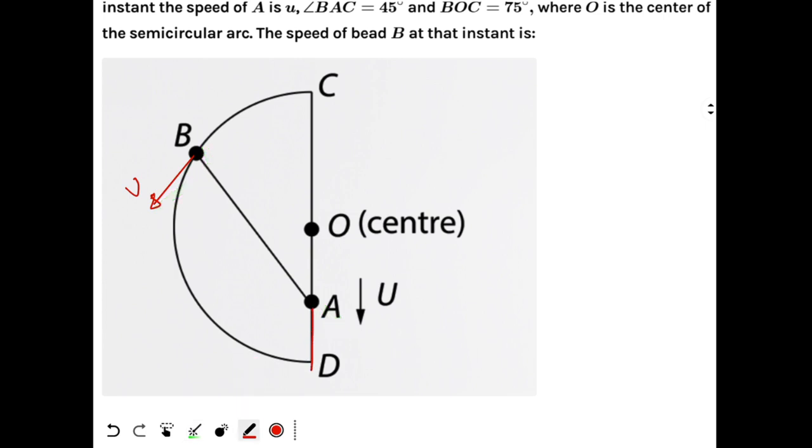This is U. So component of V and component of U along the wire - these two components should be equal.